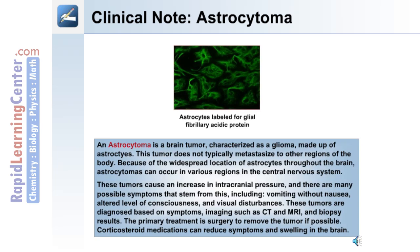The following is a clinical note on a glial tumor known as an astrocytoma. This brain tumor is characterized as a glioma. It does not typically metastasize to other regions of the body, but because of the widespread location of astrocytes throughout the brain, astrocytomas can occur in various regions of the central nervous system. These tumors cause an increase in intracranial pressure, leading to symptoms including vomiting without nausea, an altered level of consciousness, and visual disturbances. These tumors are diagnosed based on symptoms and imaging such as CT and MRI, as well as biopsy. The primary treatment is surgery to remove the tumor if possible, and corticosteroid medications can be used to reduce swelling and intracranial pressure.